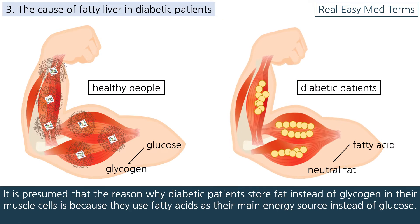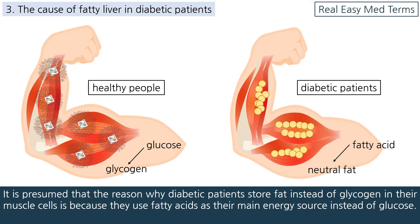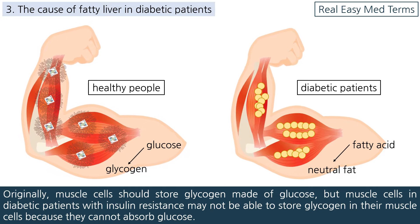It is presumed that the reason why diabetic patients store fat instead of glycogen in their muscle cells is because they use fatty acids as their main energy source instead of glucose. Originally, muscle cells should store glycogen made of glucose, but muscle cells in diabetic patients with insulin resistance may not be able to store glycogen because they cannot absorb glucose.